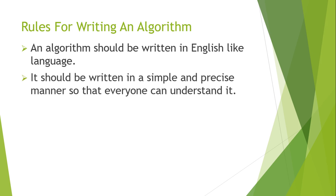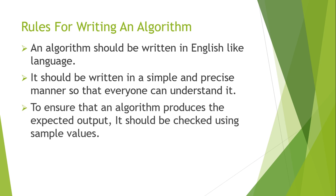The steps should be in a precise manner — your first step and the second step should be relatable to each other. They shouldn't jump randomly from one unrelated thing to another. The next rule is to ensure that the algorithm produces the expected output; it should be checked using simple sample values. Whenever you are making an algorithm for any program, you need to provide sample inputs to check whether the algorithm is giving the desired output or not, and make changes accordingly.